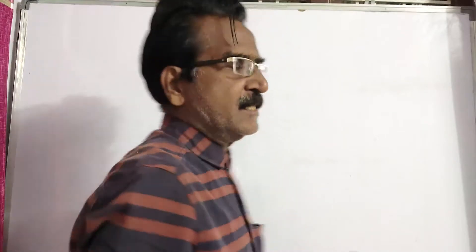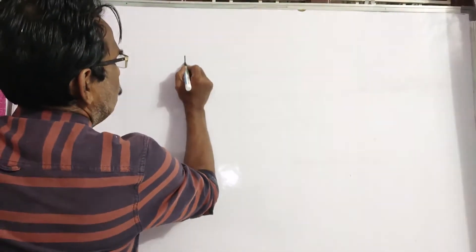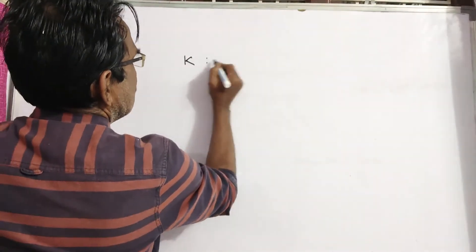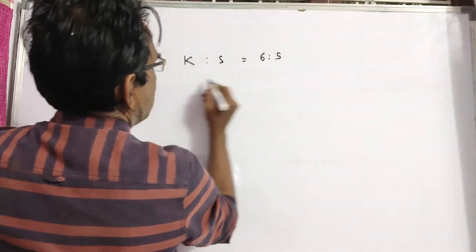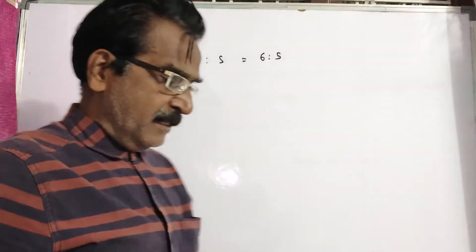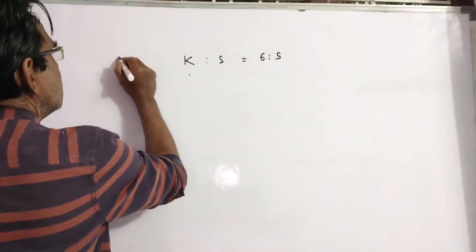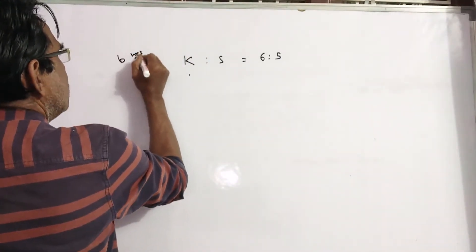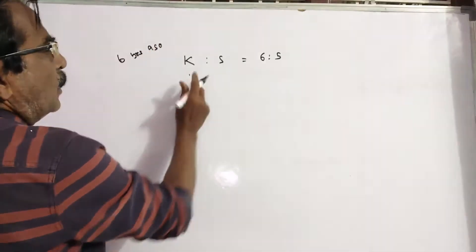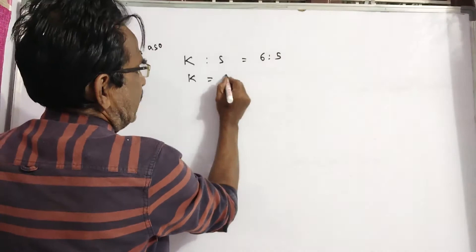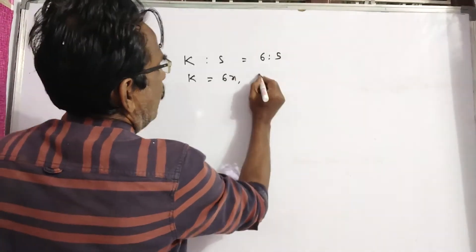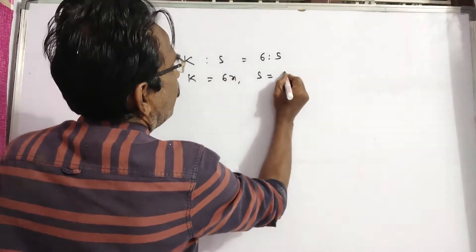Six years ago, the ratio of the ages of Kunal and Sagar was six to five. That means six years ago, Kunal's age was 6X and Sagar's age was 5X.